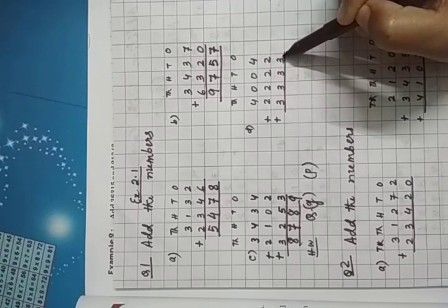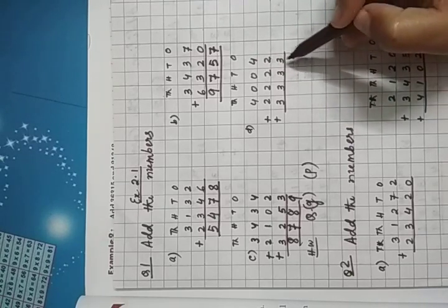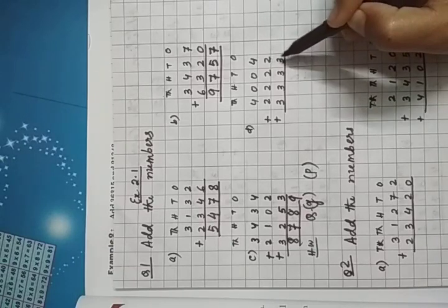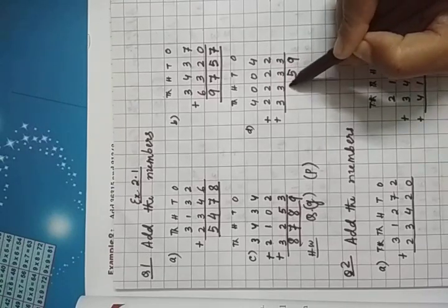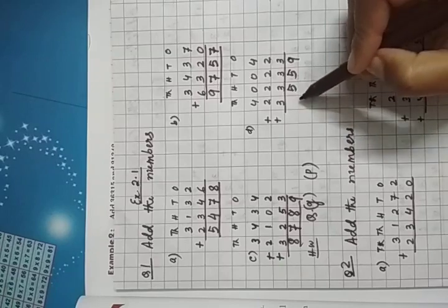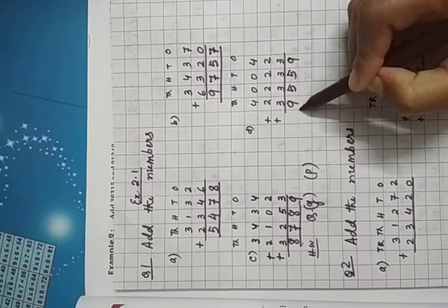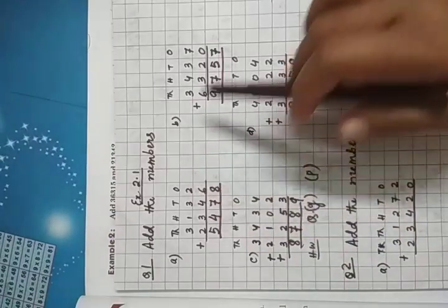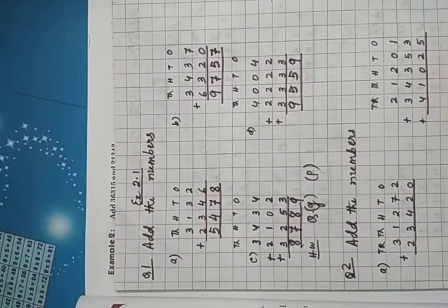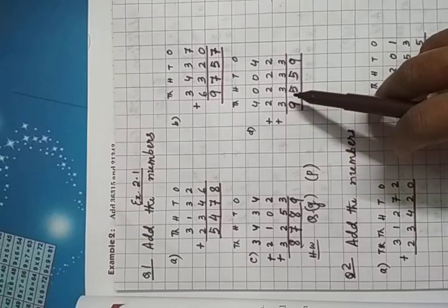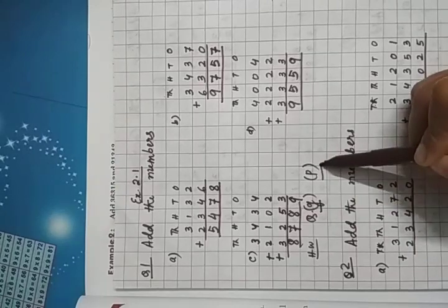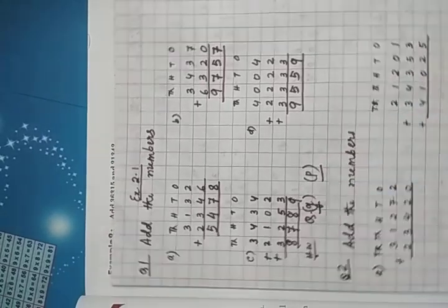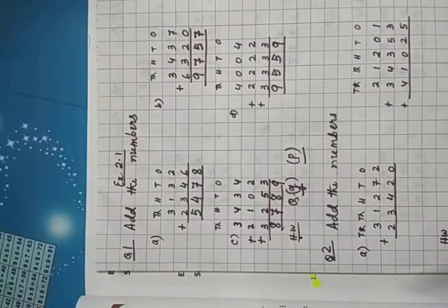Here also, 4 plus 2, plus 3. What will be the sum? Tell me. Is it 9? Yes. It is 9. Then 3 plus 2, plus 2, 5. And 4 plus 2, 6, plus 3, 9. 9,559. So these 4 questions of you, note down. These 4 questions you have to do in classwork copy. And this question number 1, G and P part is your homework. G and P is your homework.